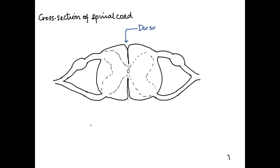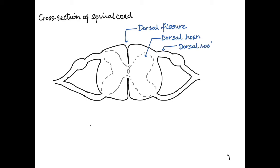On the dorsal side, the indentation shown is the dorsal fissure. The gray matter inside has an H-shaped part which extends near the dorsal root — this is called the dorsal horn. From the dorsal side, there is a region where the nerves enter the spinal cord — that part is the dorsal root.